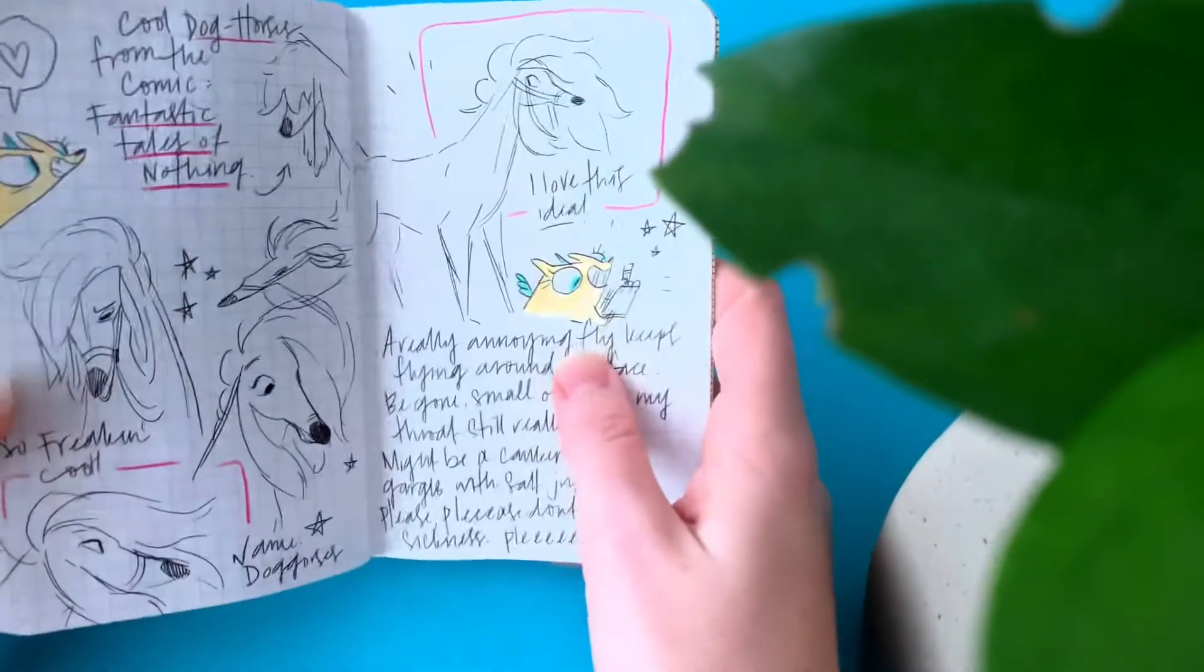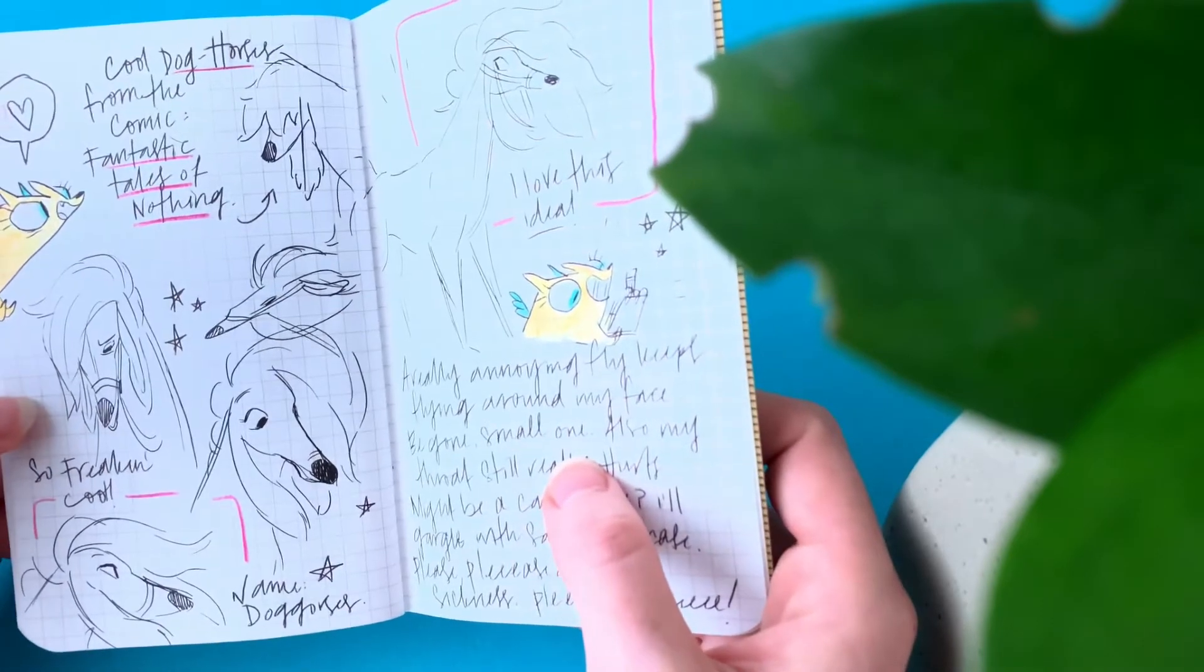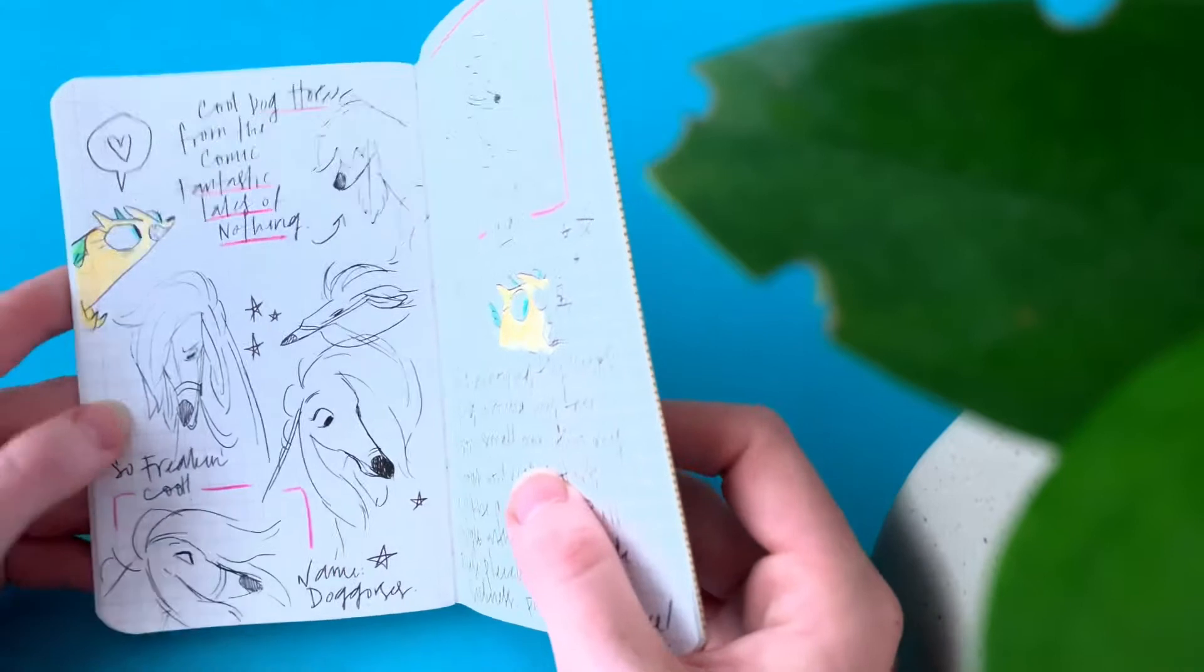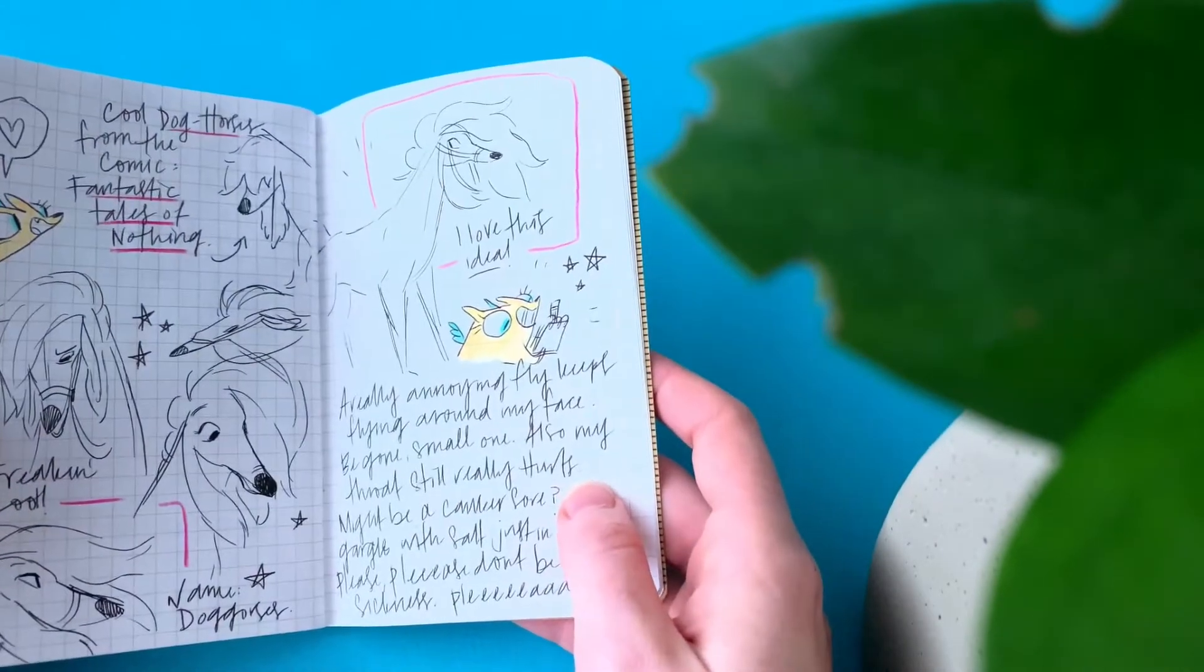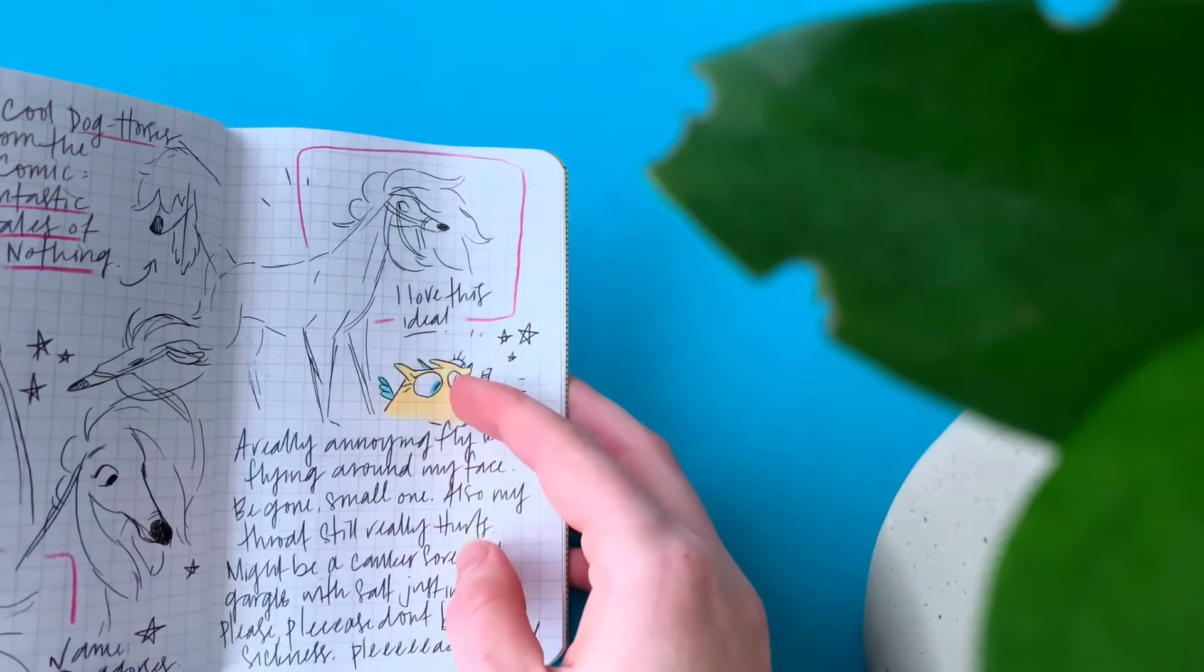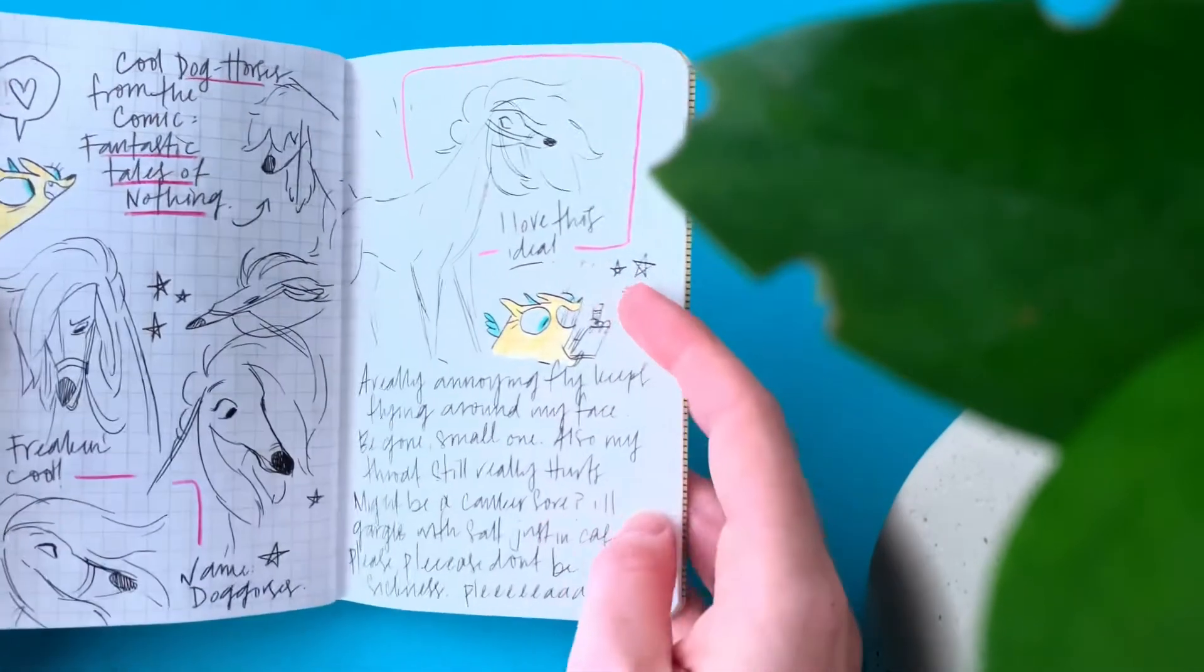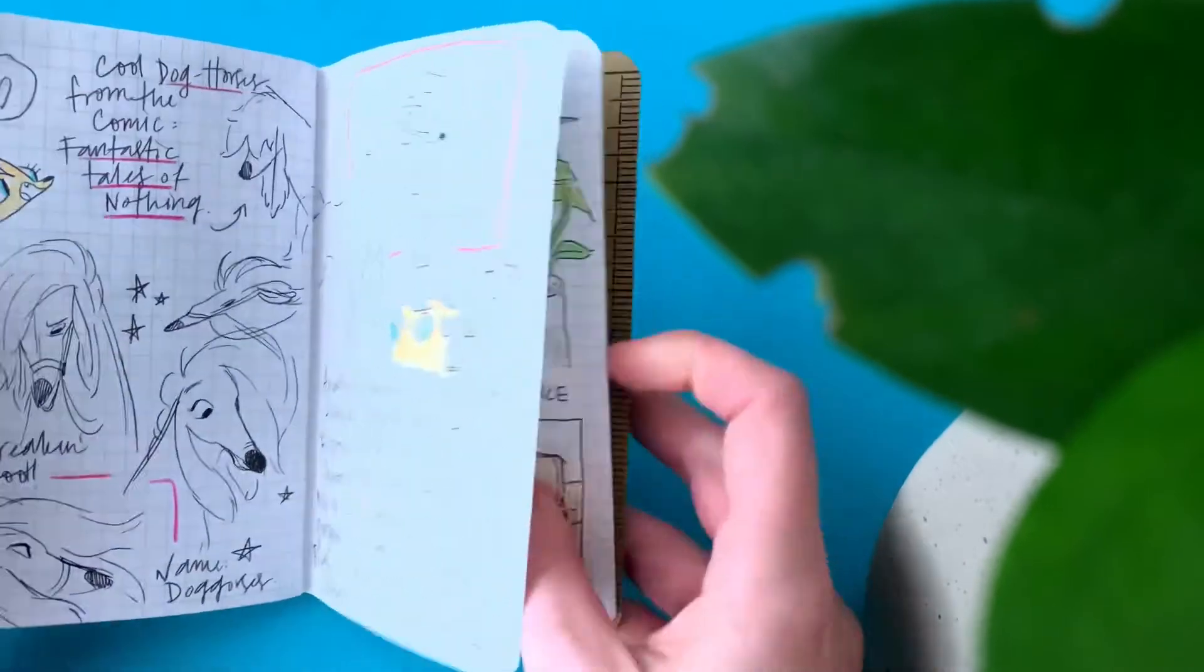I don't know, our brains honestly just get stuck in these patterns. This was from a book called The Fantastic Tales of Nothing. It is a comic book and they have these really cool like they're called dog horses. It's basically dogs and horses mixed together so they ride them like a horse and they're big like a horse but they're dogs. I don't know I was really into it so I just sketched out some of the poses that they had just to kind of get it in my brain.